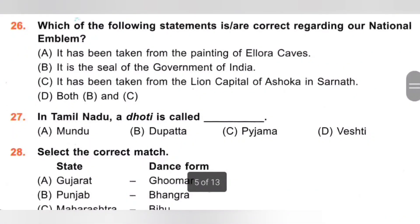26th. Which of the following statements is incorrect regarding our national emblem? A. It has been taken from the painting of Ellora caves — incorrect statement. B. It is the seal of the Government of India — correct. C. It has been taken from the lion capital of Ashoka in Sarnath — correct. Both B and C are correct statements. Option D, both B and C, is the correct answer.